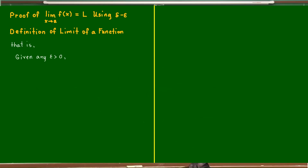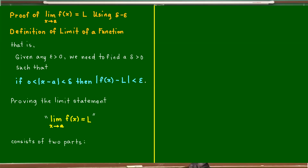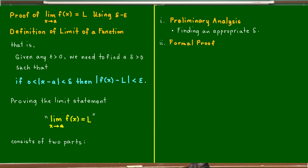That is, given any epsilon greater than 0, we need to find a delta greater than 0 such that if the absolute value of x minus a is between 0 and delta, then the absolute value of f of x minus l is less than epsilon. Proving the limit statement consists of two parts: first, preliminary analysis, that is, finding an appropriate delta that will work on this conclusion. Second, we have our formal proof, that is, showing that the chosen value of delta really works.